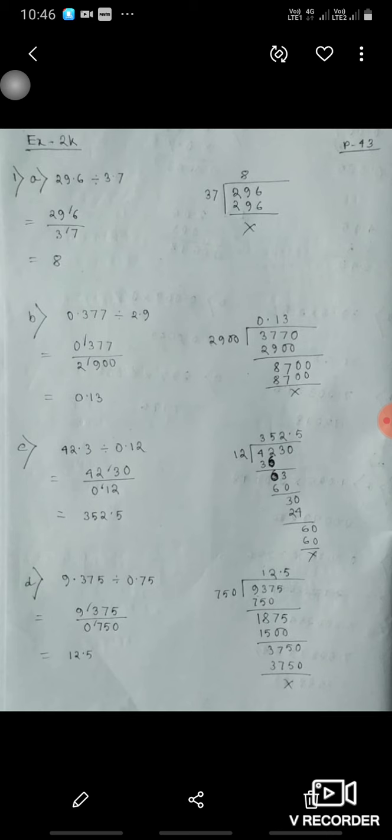Same way, 0.377 divided by 2.9. Now firstly we will remove the decimal, so you will get 2900 divided by 3770 which is equal to 0.13. 42.3 divided by 0.12, so you will get 4230 upon 12, that will be equal to 352.5.